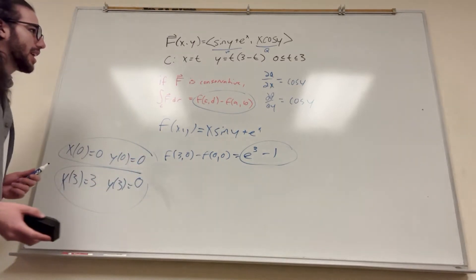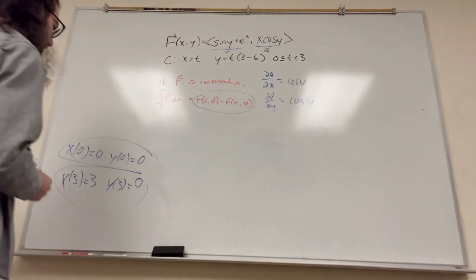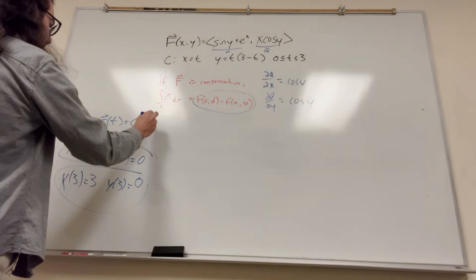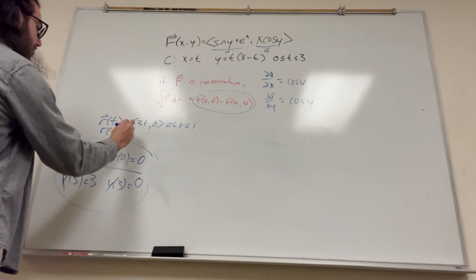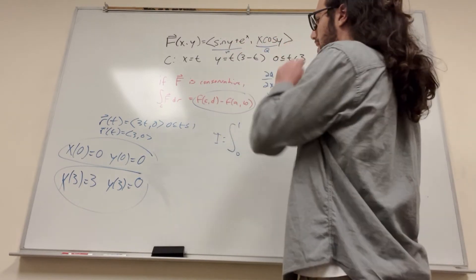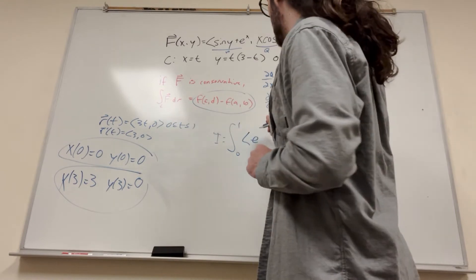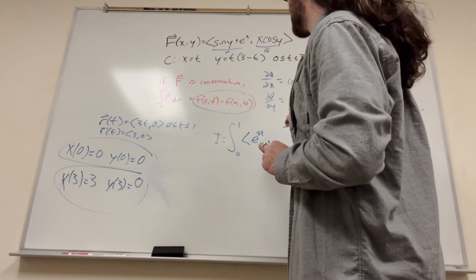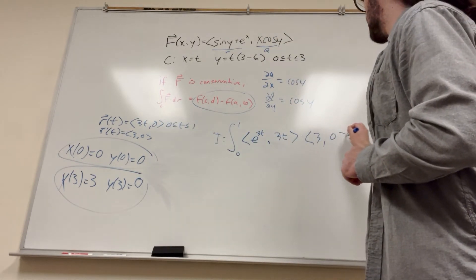Our line goes from (0, 0) to (3, 0), so we can say r(t) equals (3t, 0), because y never moves, on 0 ≤ t ≤ 1. Then r prime of t equals (3, 0). Now we set up the line integral the normal way: the integral from 0 to 1, plugging in x and y. Sine of 0 is 0, so we get 0 plus e to the x, but x is 3t, so e to the 3t. The y-component is x cosine of y, which is 3t cosine of 0. We dot this with our derivative vector (3, 0) dt.